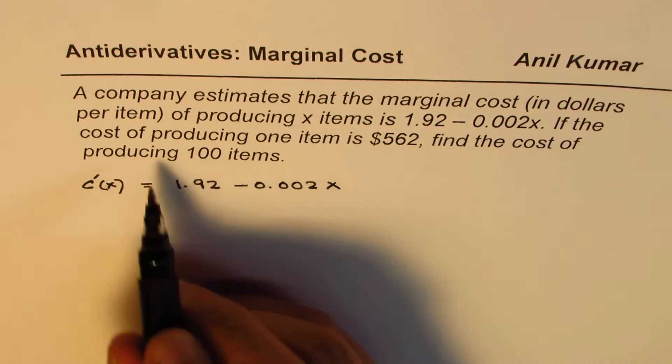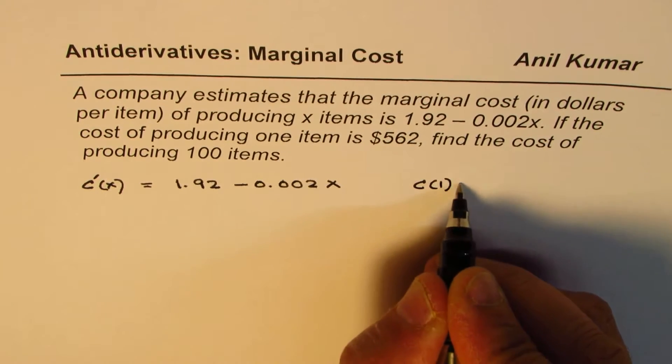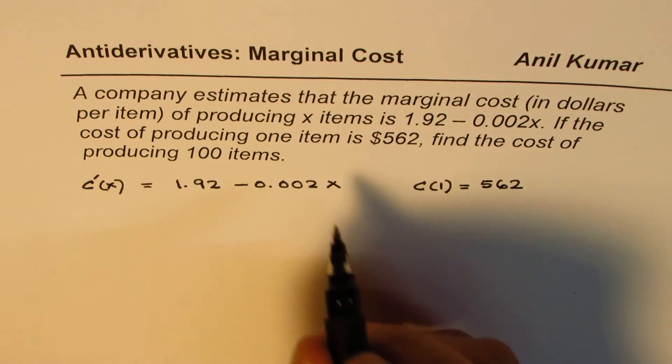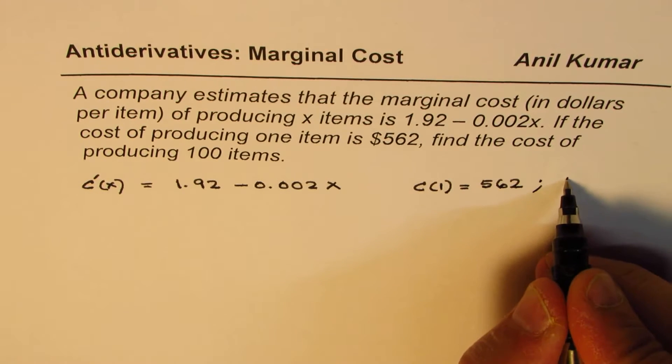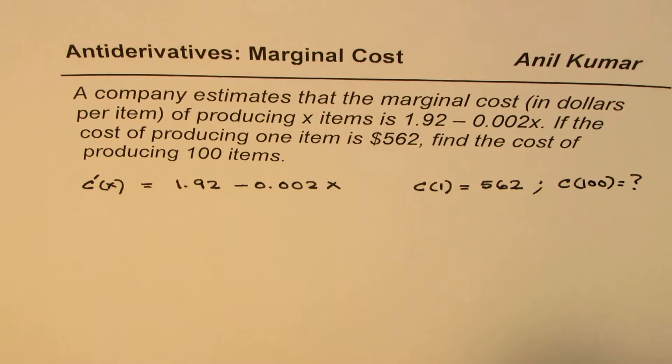We are also given the cost of producing one item. That is to say, C(1) equals 562. And what we need to find is the cost of producing 100 items. We need to find C(100).